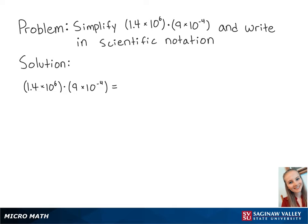For this problem, we're going to simplify 1.4 times 10 to the 6 times 9 times 10 to the negative 4th, and we're going to write it in scientific notation.